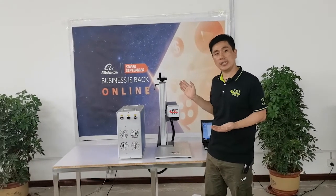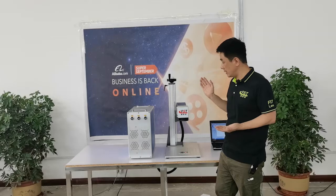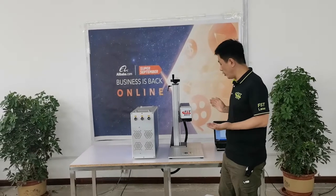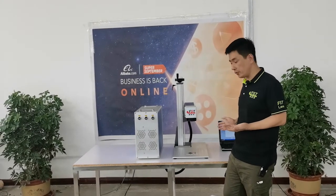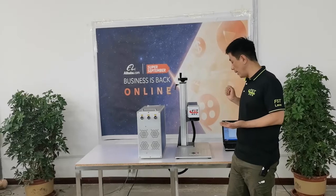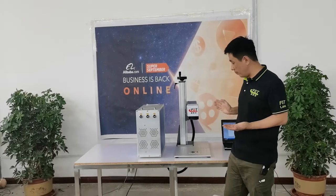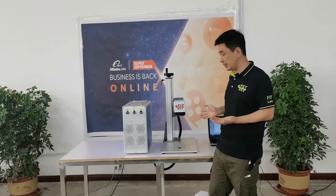This machine, we use the JPT Laser Source M7. This is 30 watts for this machine. Mark all kind of color on the stainless steel and mark black color on white plastic.